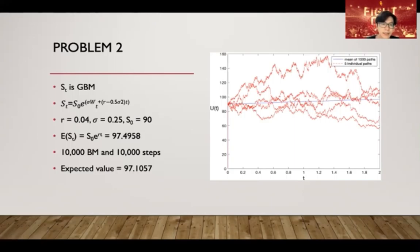Then we use the code, like the last question, and we generate 10,000 Brownian motions and distribute it into 10,000 steps. This time, the time is from 0 to 2. After we run the code, the expected value is 97.1057.